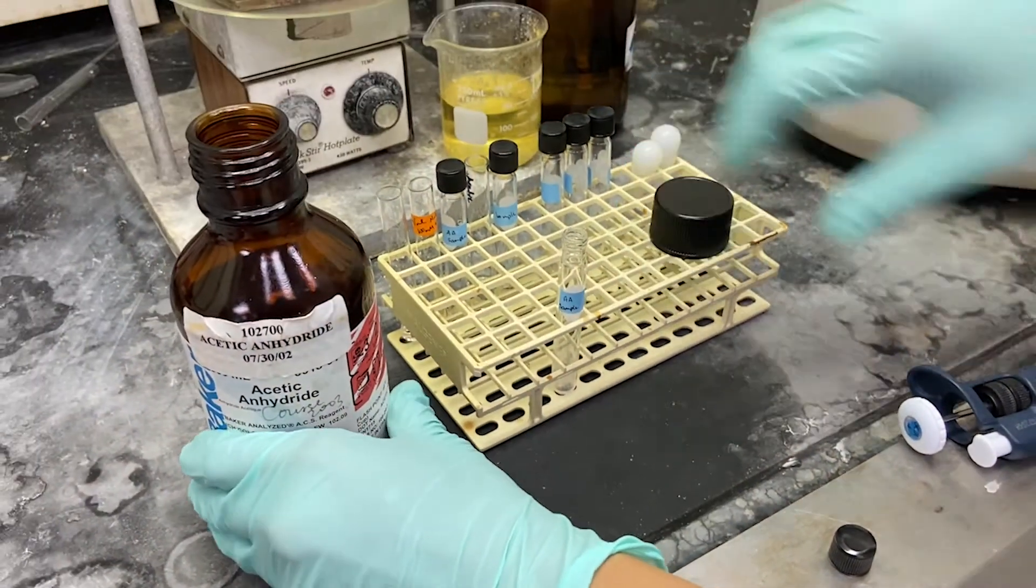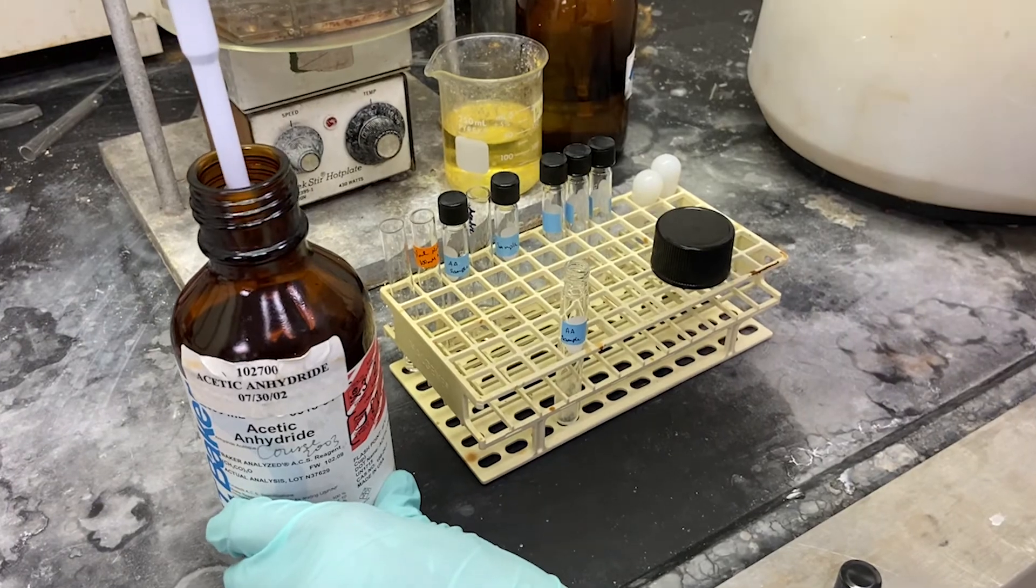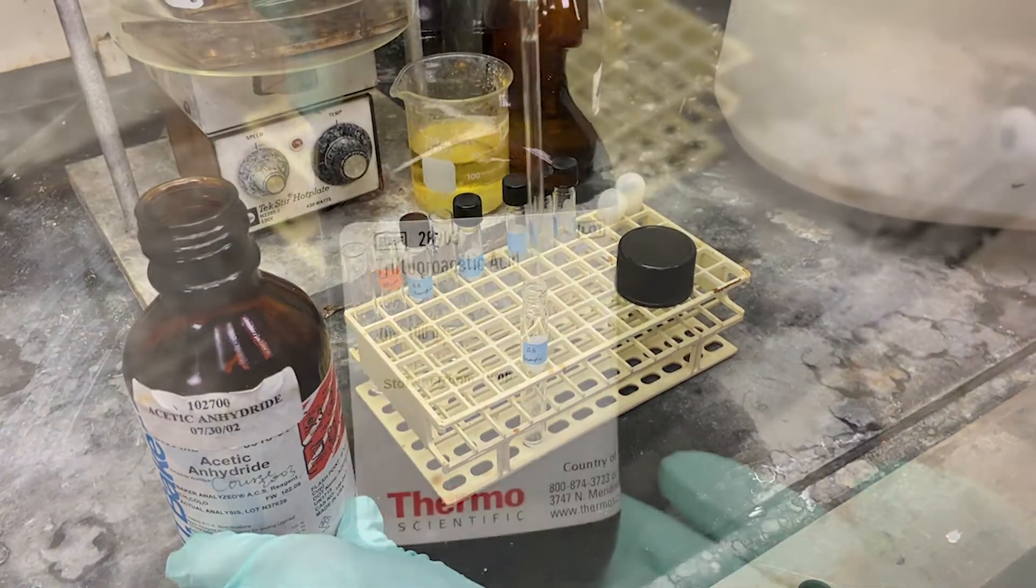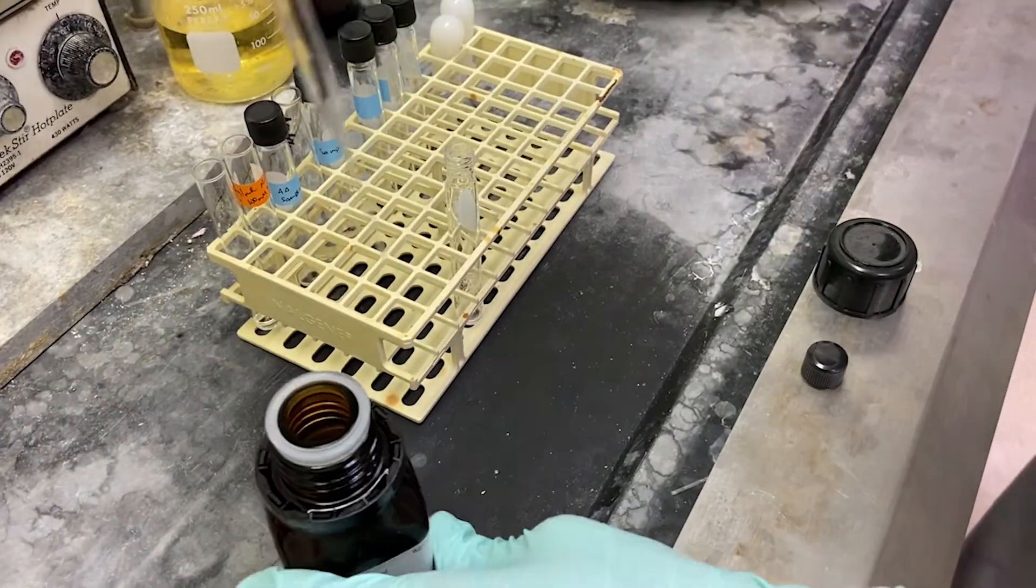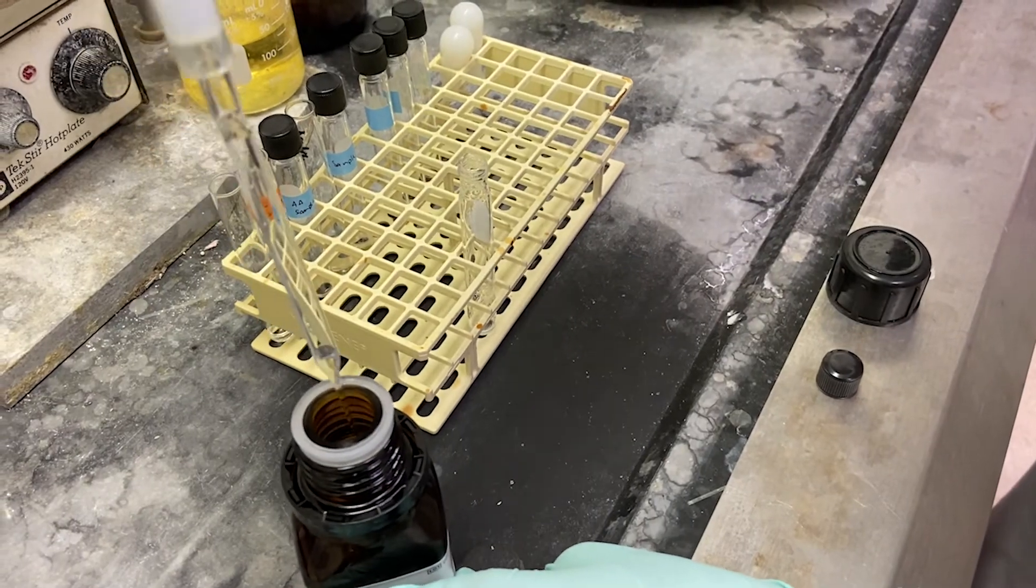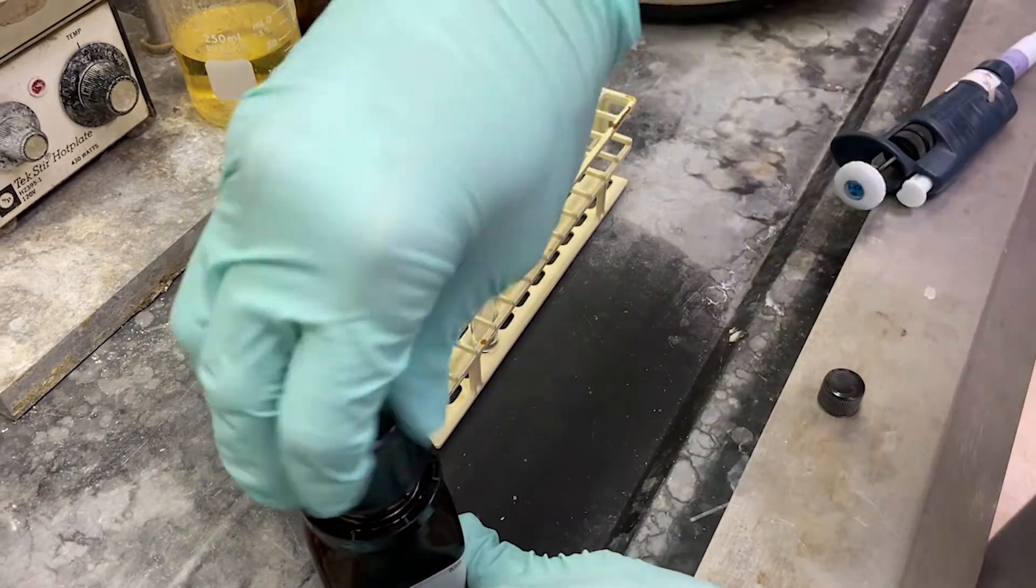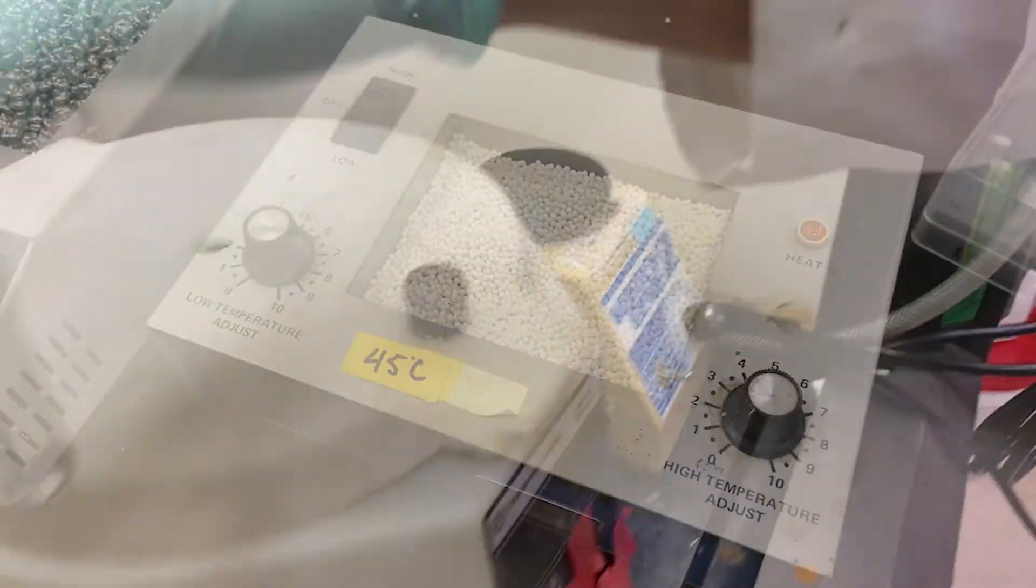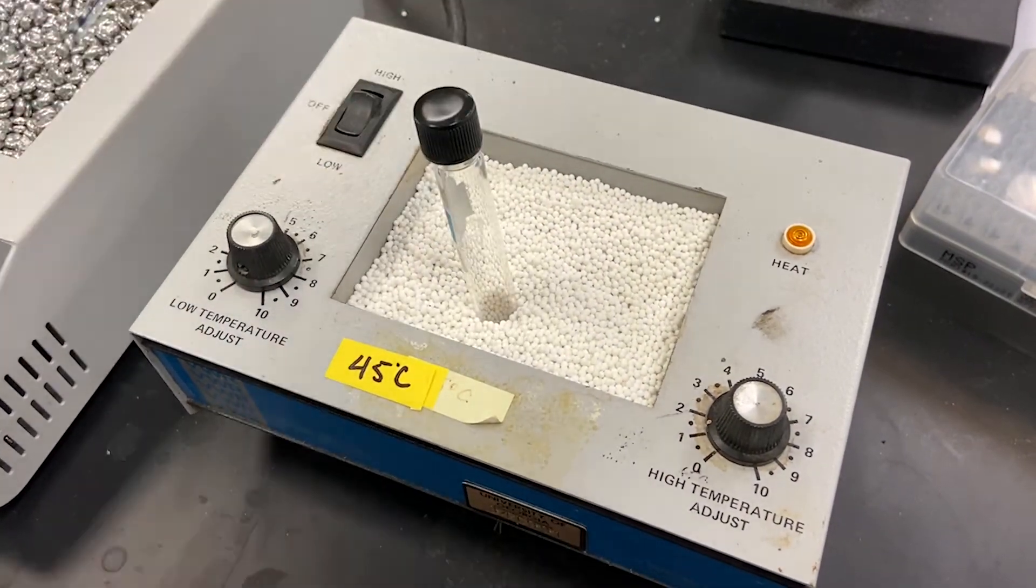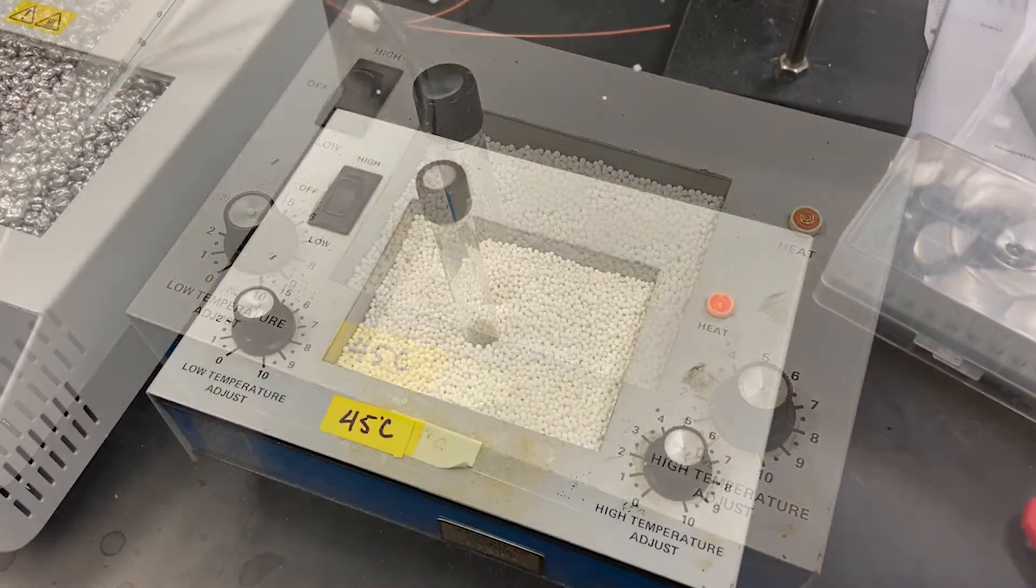Now for our final step, the acetylation. 250 microliters of acetic anhydride is added to the sample tube followed by 250 microliters of concentrated TFA. The sample is incubated at 45 degrees Celsius for 25 minutes.